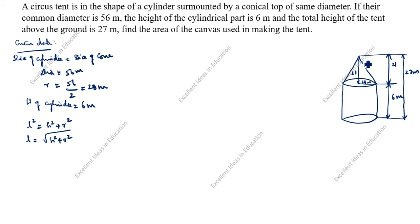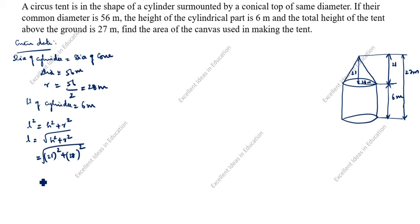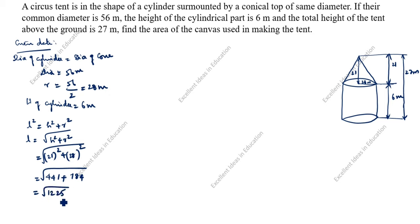We know h and r, so substituting: h is 21 and r is 28 (since cone and cylinder radius are the same). So l = √(21² + 28²) = √(441 + 784) = √1225.